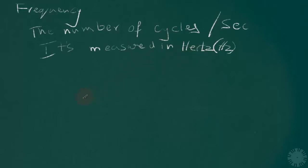For example, if there is a sound that has 100 vibrations — every second it's wiggling back and forth 100 times — we would say the frequency of that sound is 100 Hertz.